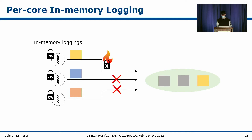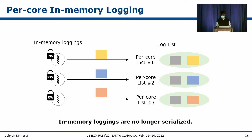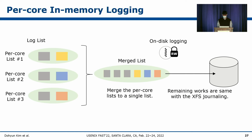In-memory logging in the original XFS is serialized by an exclusive lock protecting the log list, causing contention among multiple in-memory loggings and making them slower. To eliminate this contention, we propose POCO in-memory logging. POCO in-memory logging makes the log list a set of per-core lists, so each in-memory logging inserts the log into the list on the core where it is being executed — allowing insertion without contention or serialization. When on-disk logging begins, it merges all per-core lists into a single list, then constructs the log buffer and commits to disk.